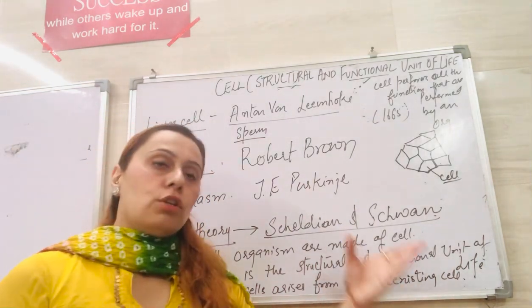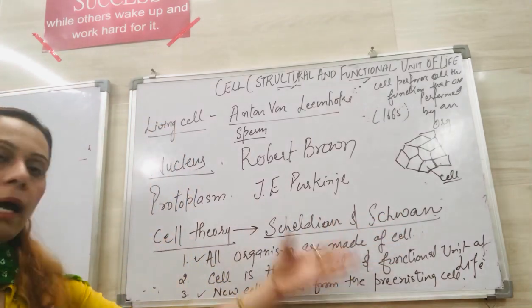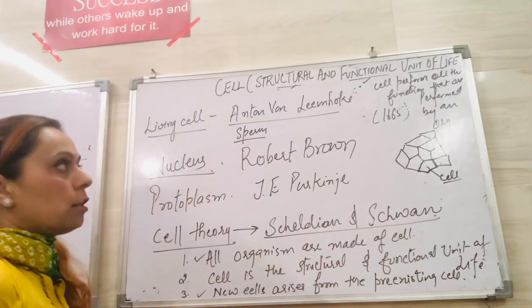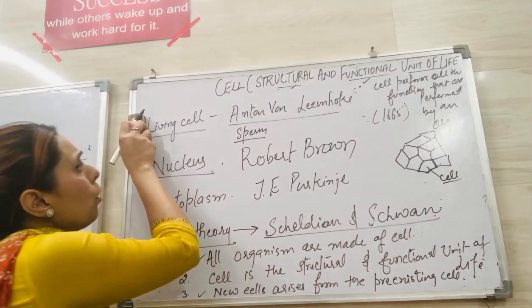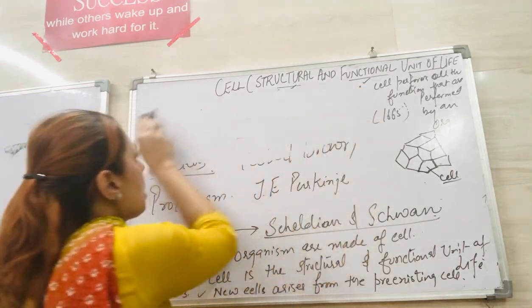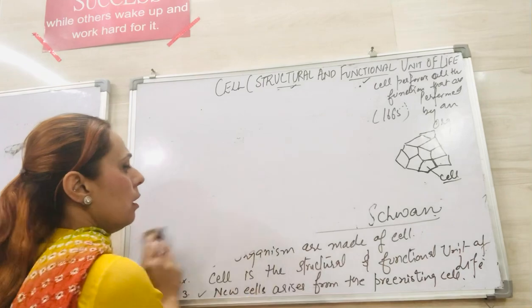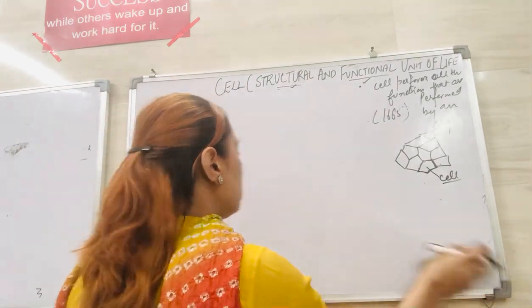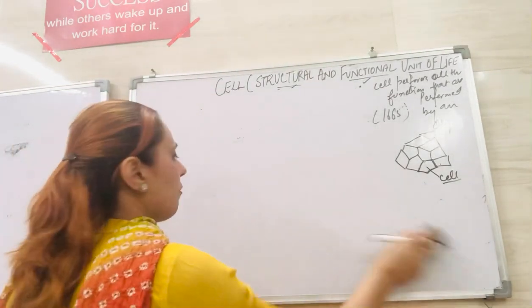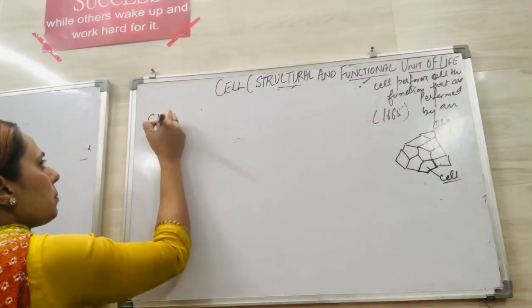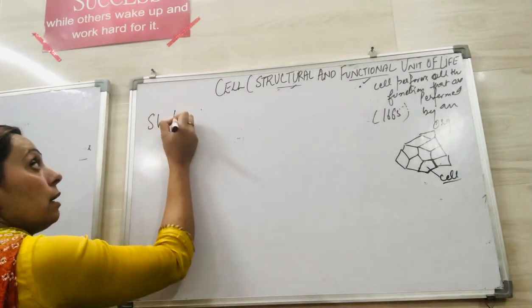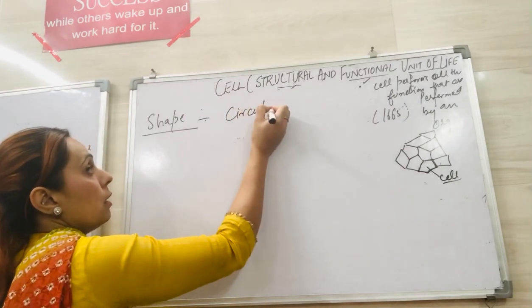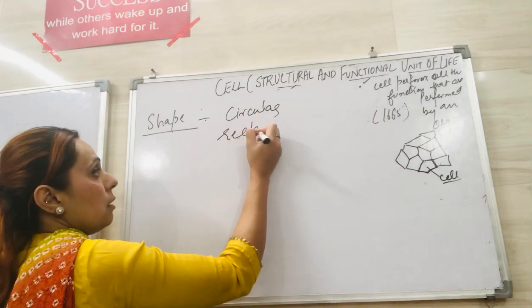This is what we call Schleiden and Schwann's theory, or the cell theory. Now we come to the size and shape of cells — what are the various shapes and sizes and different types of cells we have. The shape of a cell can appear in many forms: it could be circular, rectangular, or irregular in shape.